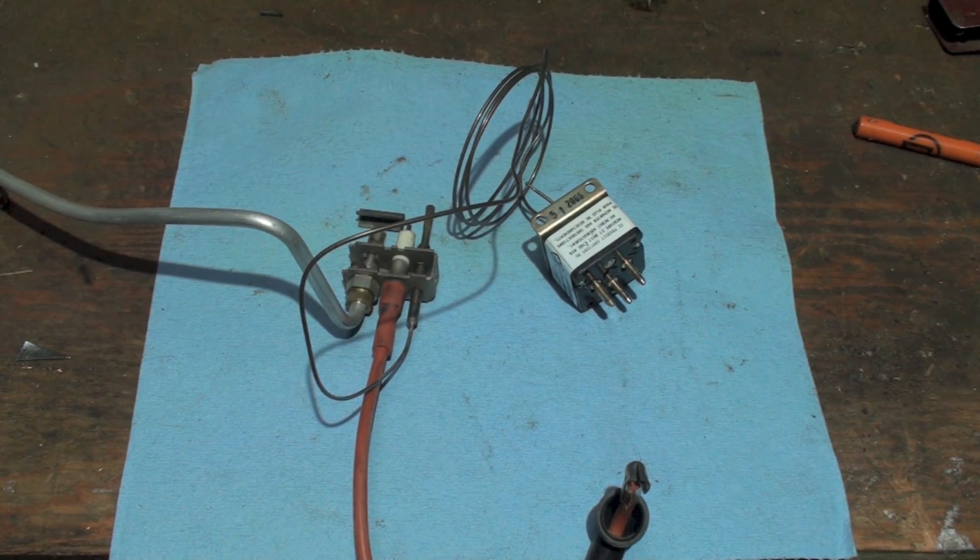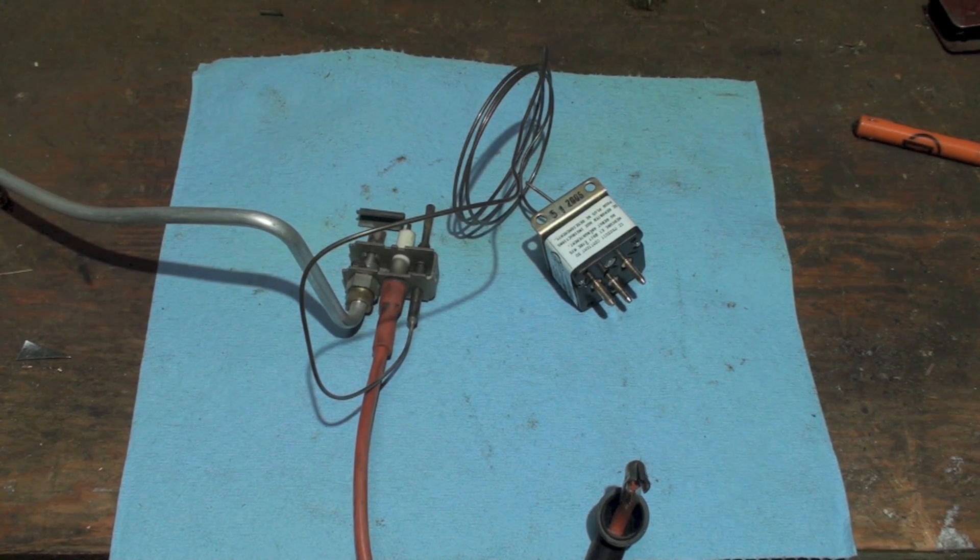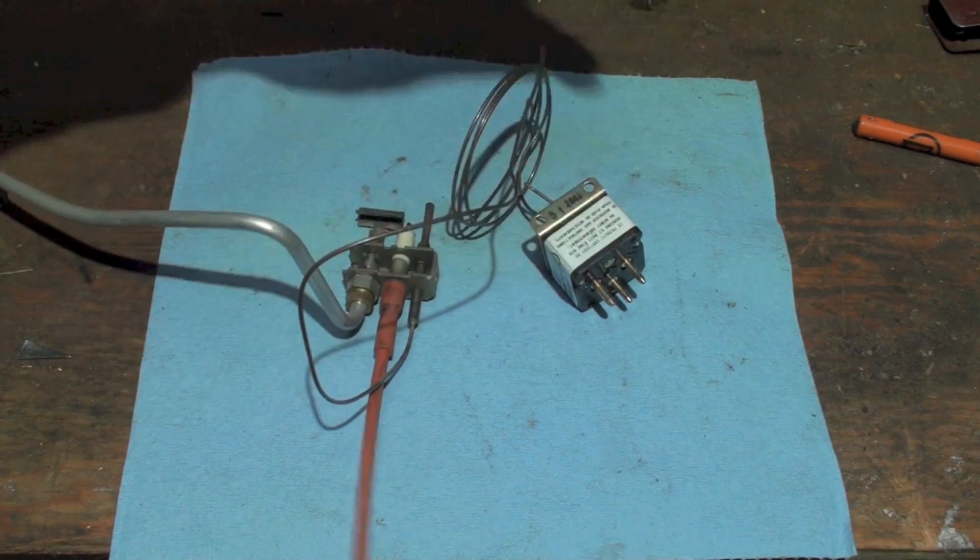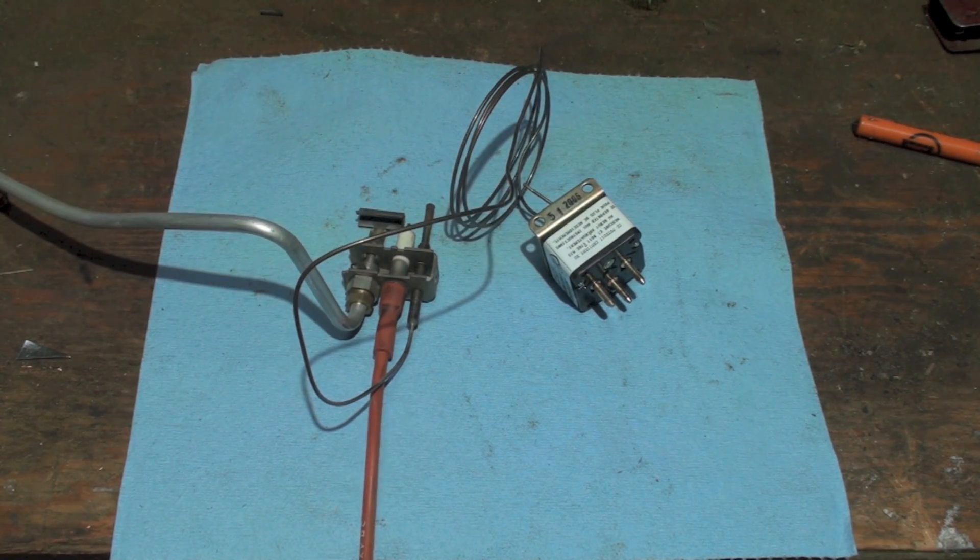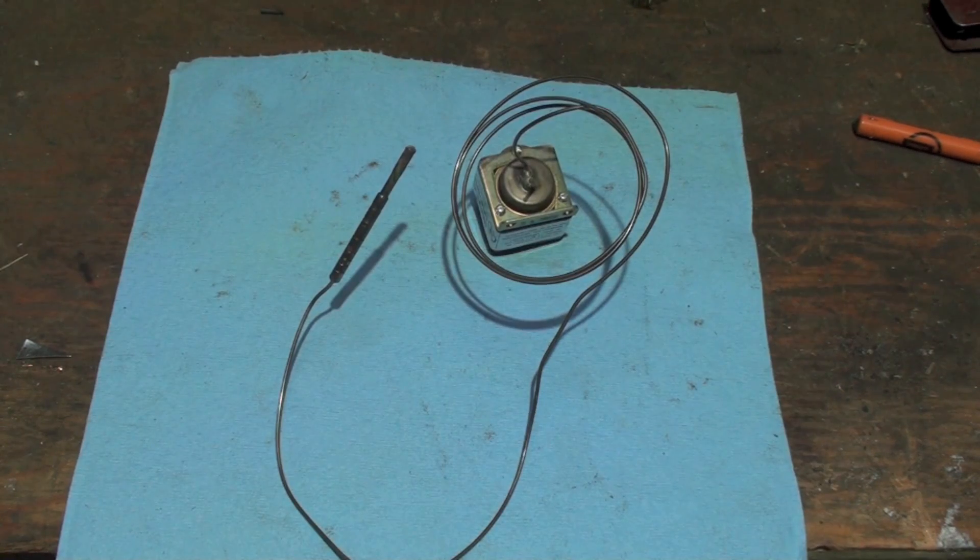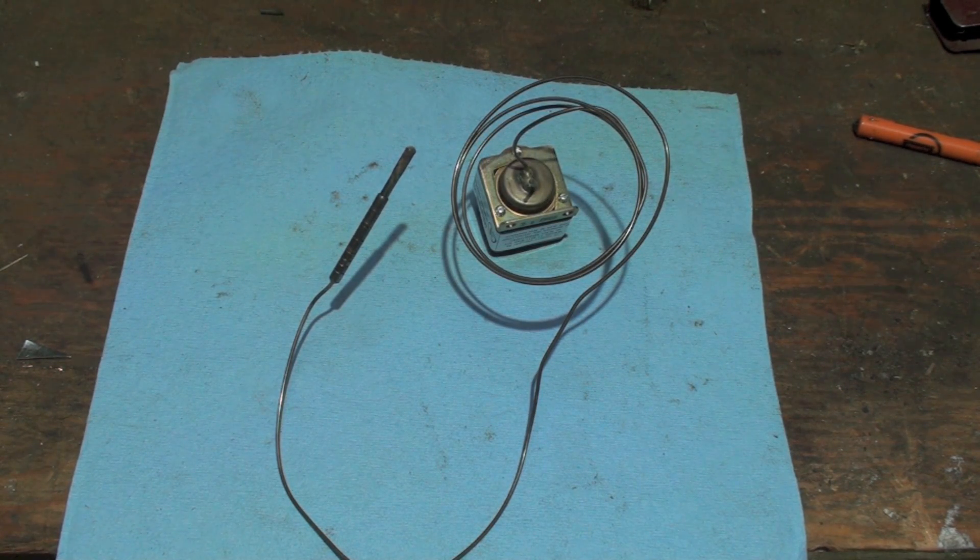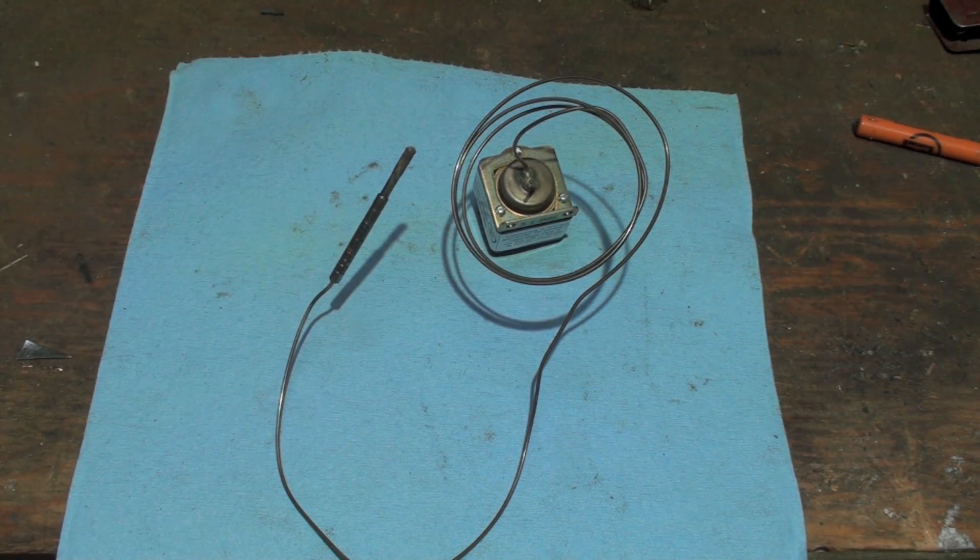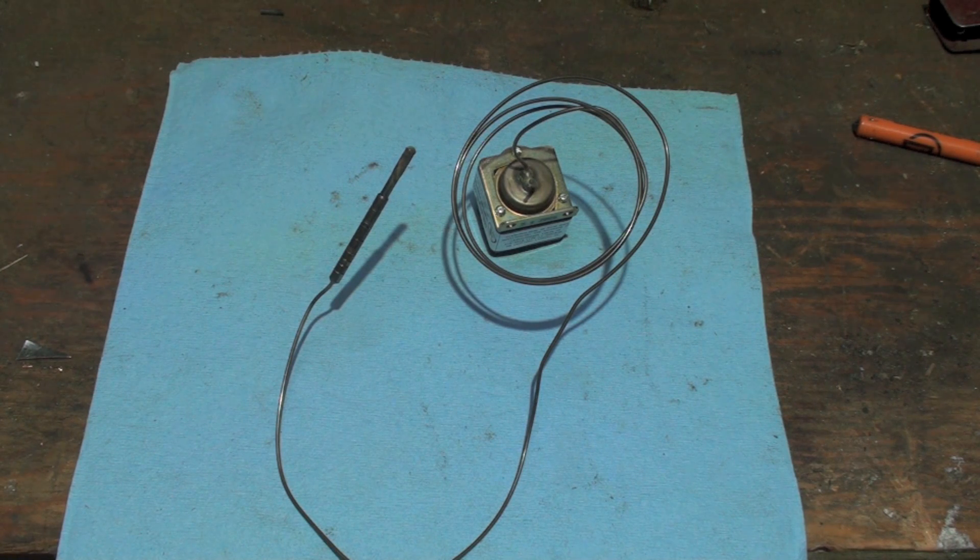Okay, here's a look at the pilot assembly plus the mercury type switch. I'm giving you an idea of why it does what it does. I've got the thermocouple-looking thing right there. I pulled that out of the pilot assembly.